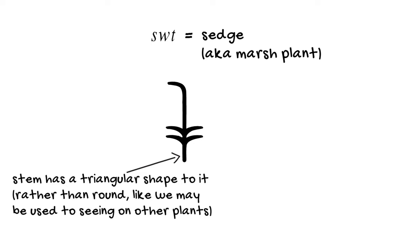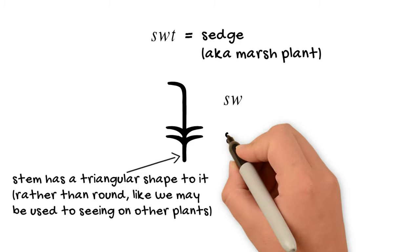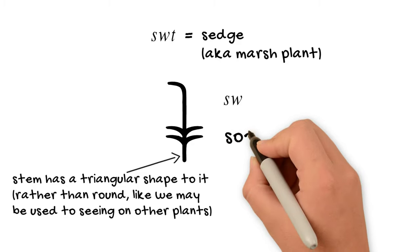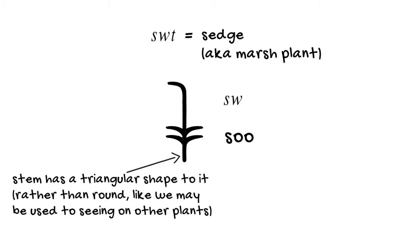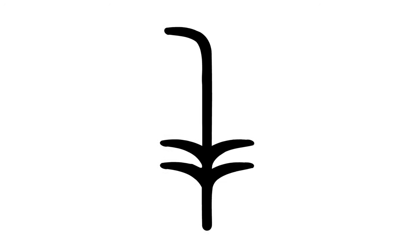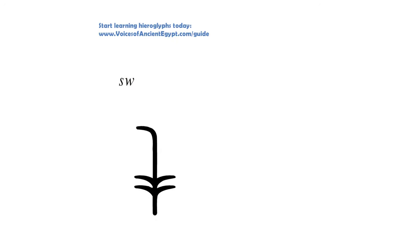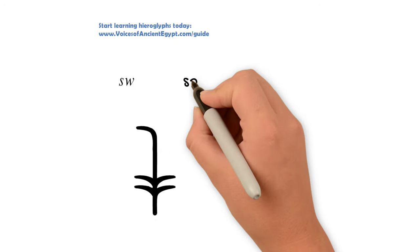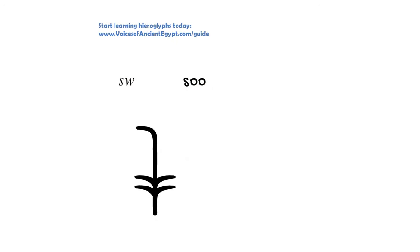But more often, it was used for the sounds in this word, specifically the S and the W, which we today pronounce as 'sue.' And so it was used to spell a variety of words that had these sounds in it. For example, it could be used to spell the pronoun that we would translate into English as 'him' — that is, 'sue.'